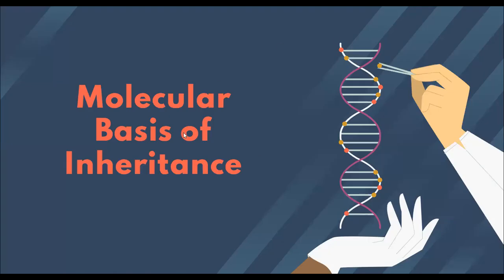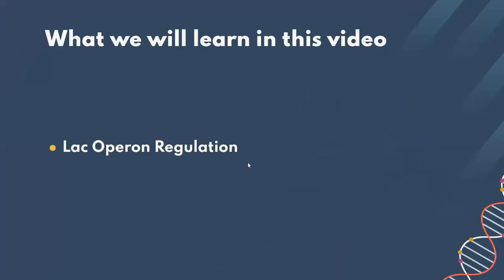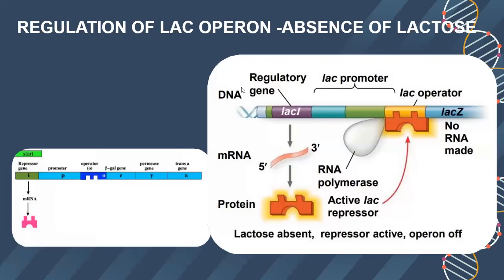Hello everyone, welcome to another video on molecular basis of inheritance. In this video we will cover how the lactose operon functions — in which scenario it will be on for transcription, and in which scenario it will be off for transcription and subsequent translation of the mRNA. In the previous video we discussed the structure, gene expression, and the structure of the lactose operon. If you haven't checked that out, please do so first, and then we'll see the working of this operon model.